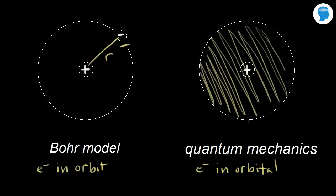So we have these two competing visions. The Bohr model is classical mechanics — the electron orbits the nucleus like the planets around the sun. But quantum mechanics says we don't know exactly where that electron is. The Bohr model turns out to be incorrect, and quantum mechanics has proven to be the best way to explain electrons in orbitals.